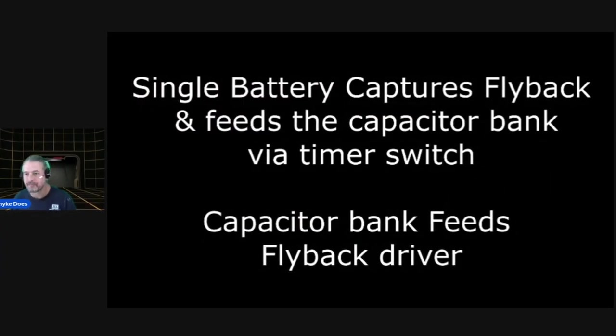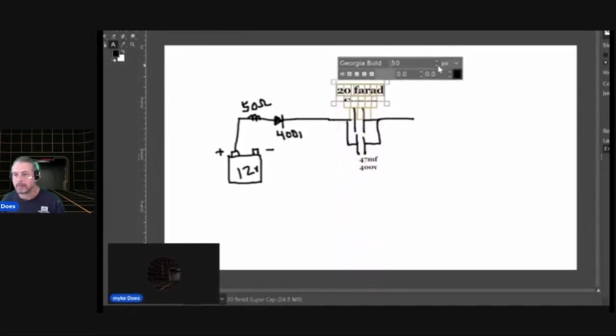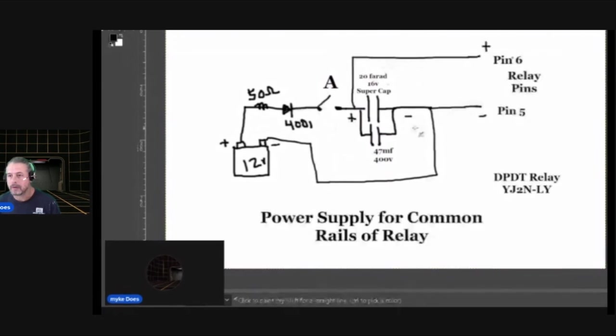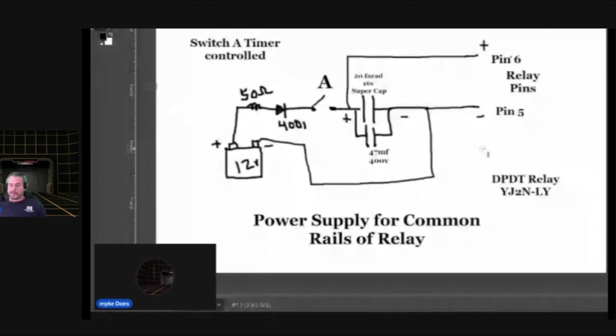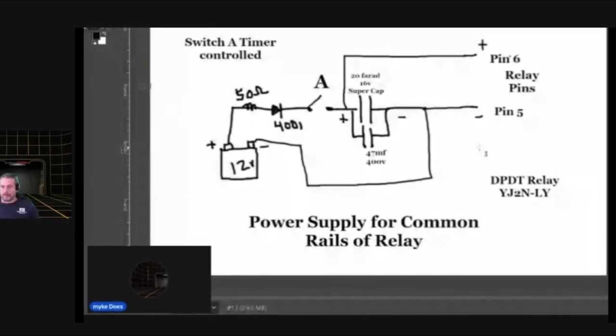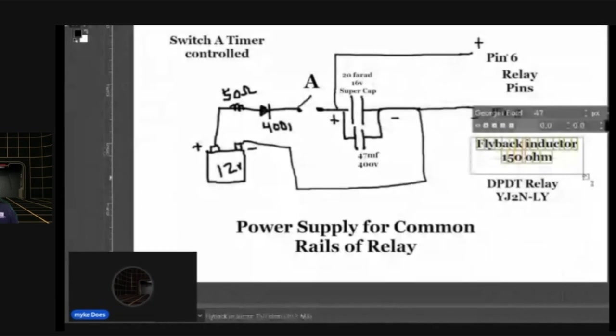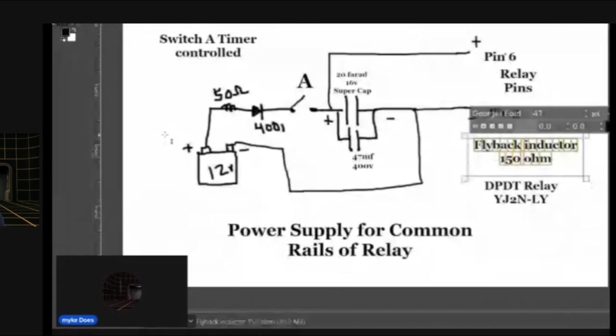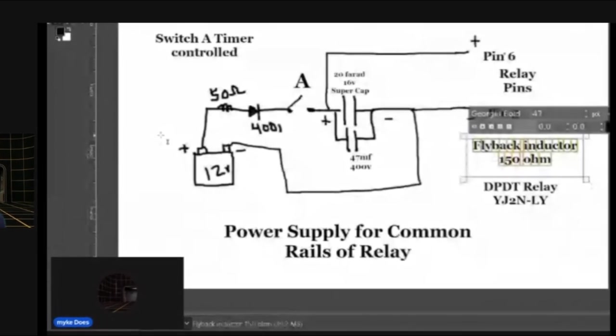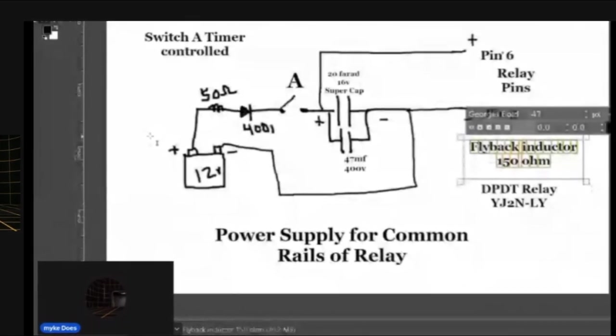What can I say about this way of capturing the flyback high voltage? Here you have a battery on the left. It's a source power for your driving circuit. The driver is a coil being pulsed and basically capturing the reverse flyback of that coil.